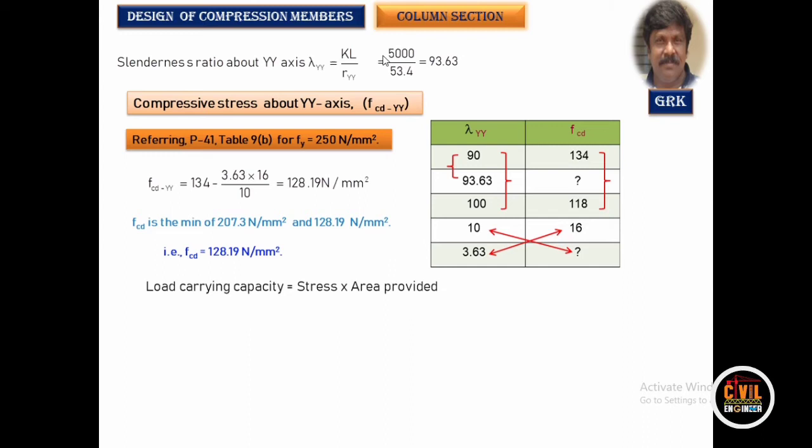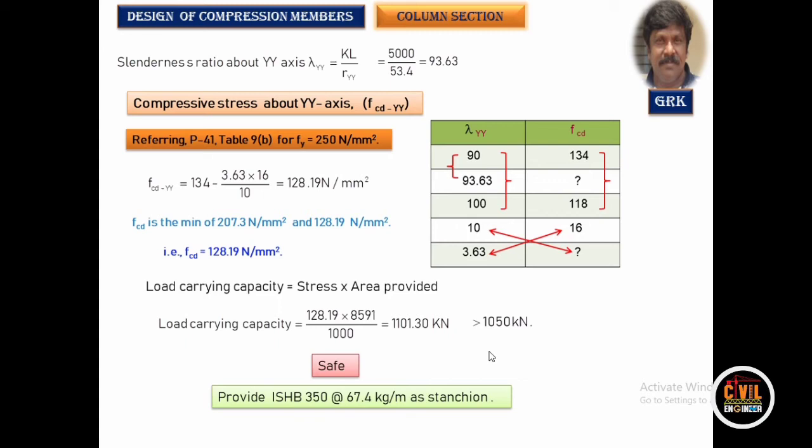The minimum of the two values — 207.5 along ZZ and 128.19 along YY — is 128.19 MPa as the design stress. Load carrying capacity = 128.19 × 8591 = 1101.30 kN, which is greater than 1050 kN. The load carrying capacity is very close to the factored load of 1050 kN — the section is economical and safe. Provide ISHB 350 as the design column.